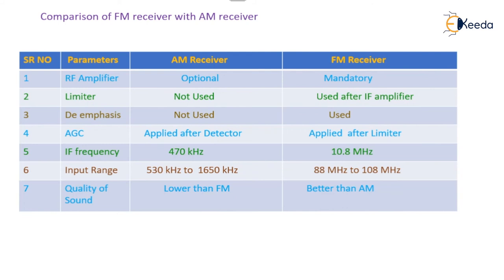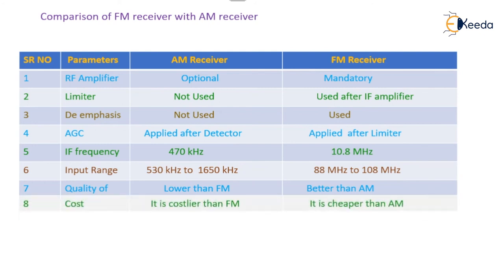Regarding the quality of sound, it is lower in AM as compared to FM receiver, whereas in FM receiver the quality of sound is better than that of AM.